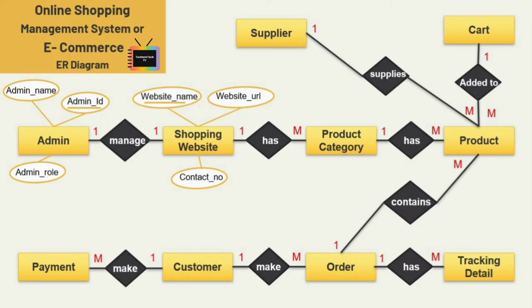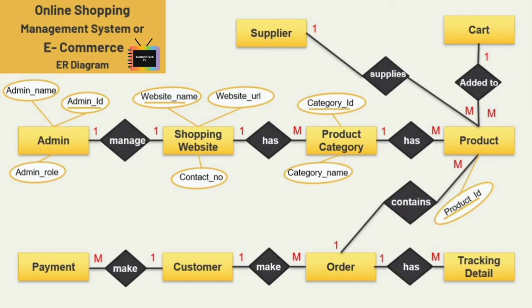Next is product category — for this we have only two attributes: category ID and name, where category ID is the key attribute. Now let's see the attributes for the entity product. First is product ID, which is the key attribute. Then we have product name, product price, and product status. Product status is used to check whether the product is available or not.